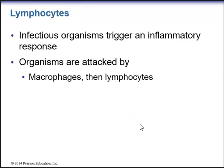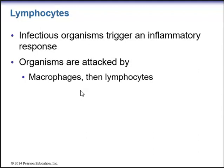With regards to lymphocytes, these are the cells of the immune system. Infectious organisms trigger an inflammatory response and are first attacked by macrophages — these are phagocytic cells that act like Pac-Man cells, engulfing the foreign invader. Organisms are then attacked by lymphocytes.